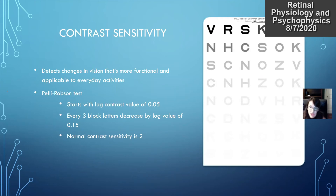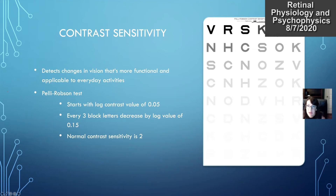Somebody with difficulty with contrast vision will be able to see a Snellen chart very easily. To look at contrast sensitivity deficits you want to do the Pelli-Robson test. These are Snellen letters in blocks of three with decreasing contrast sensitivity, measured in log values — it starts at 0.05 and each group of three letters decreases by a log value of 0.15. A normal value would be 2.0, corresponding to the seventh line; somebody with normal contrast sensitivity should be able to read down to this level.